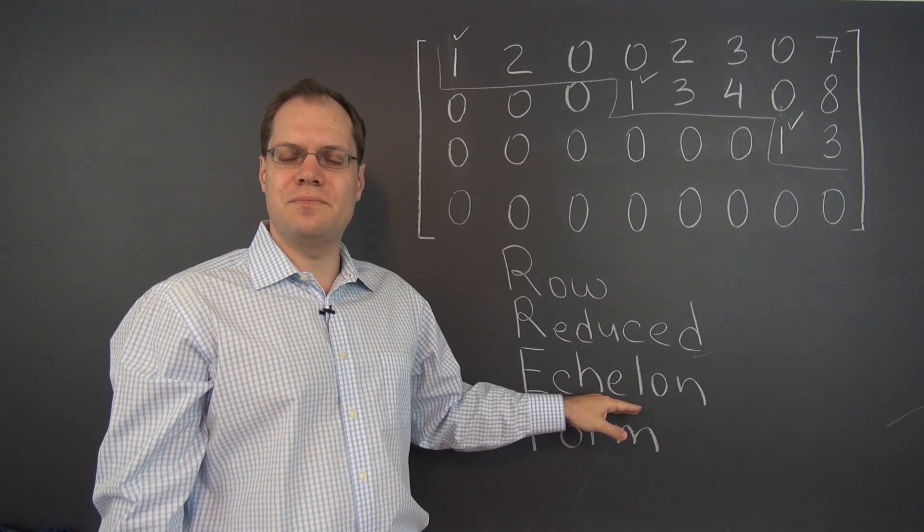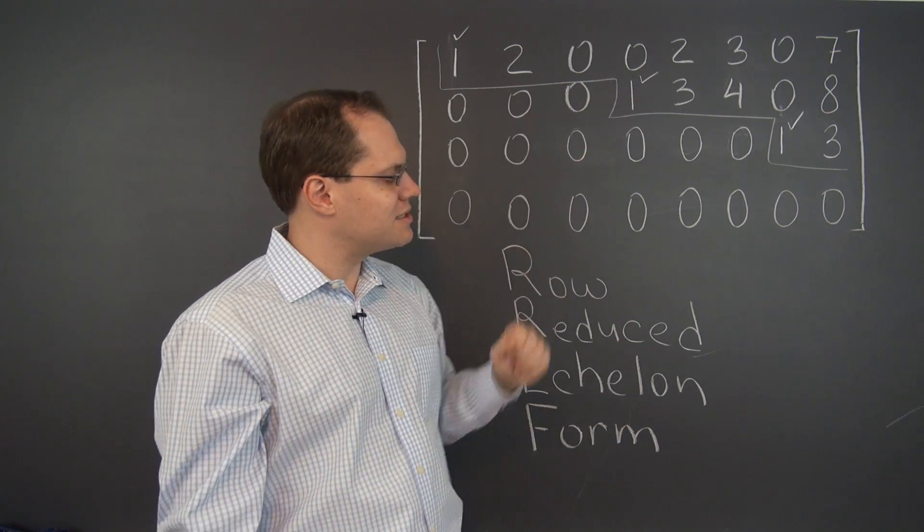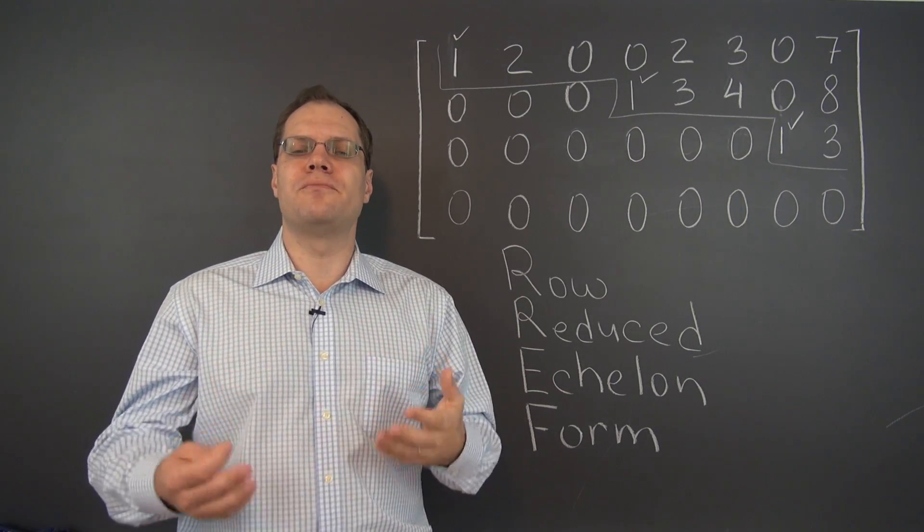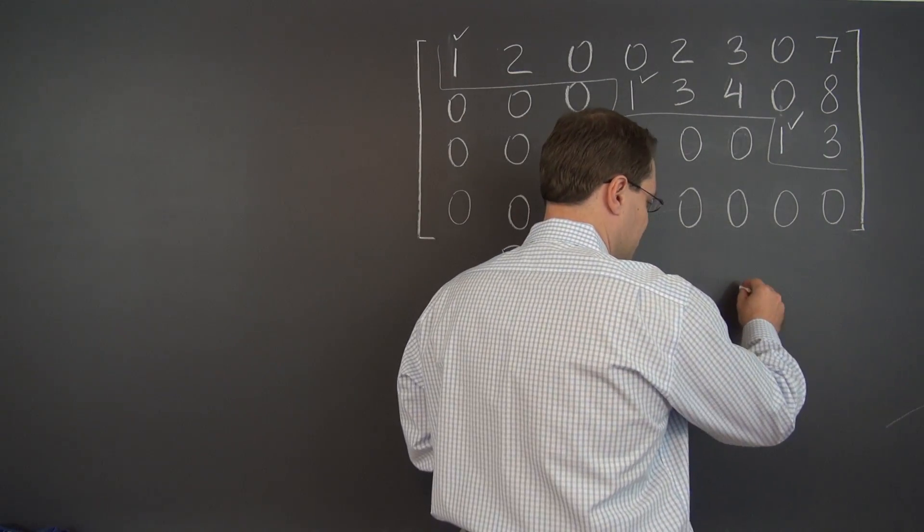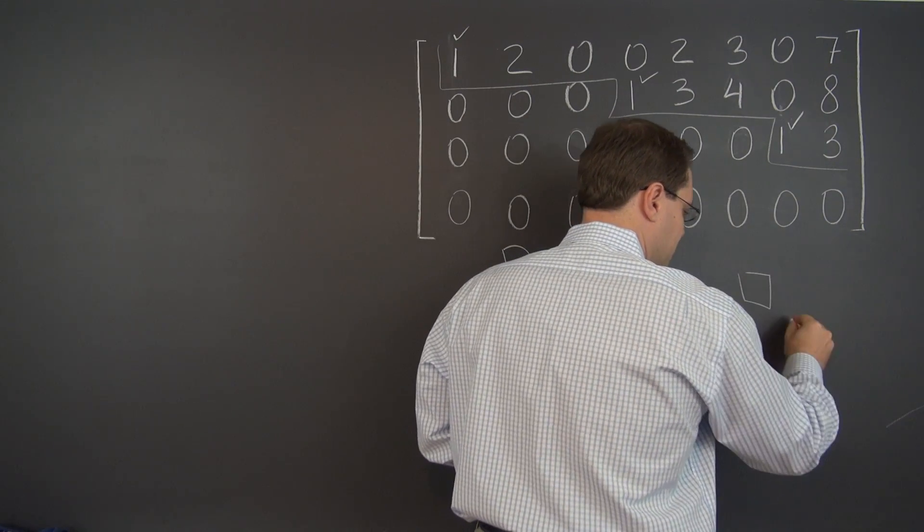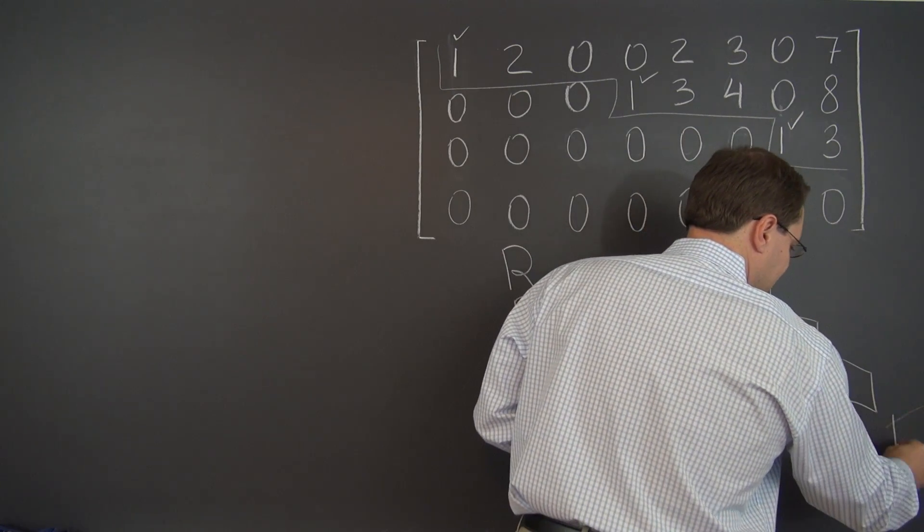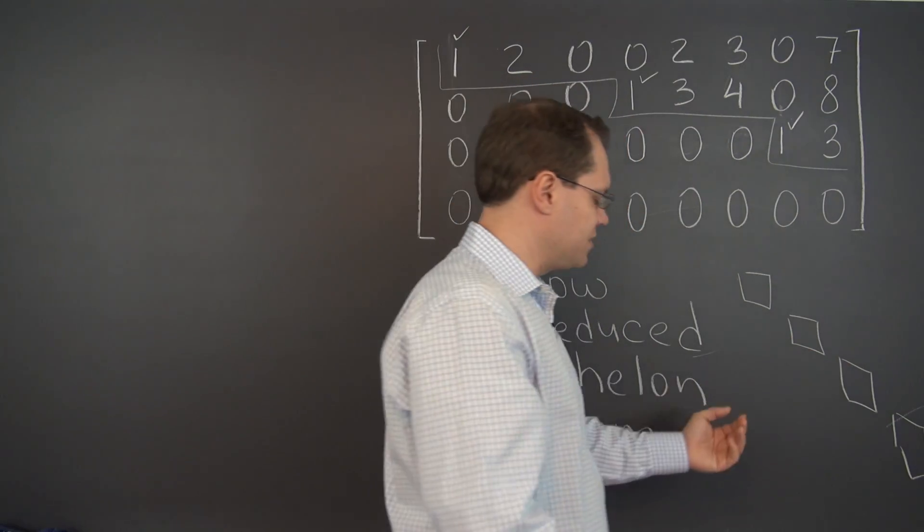Echelon comes from a French word that means steps on a stair, because this kind of looks like a stair. And also from a military formation, an attack formation. If you organize your troops or your tanks in this sort of pattern where every tank is behind and to the side of the tank in front of it.